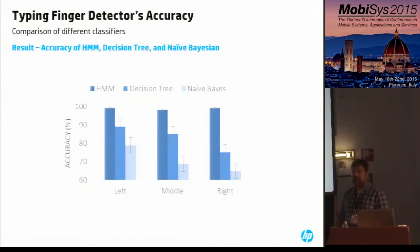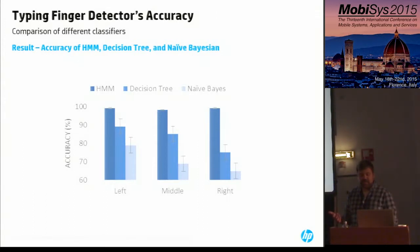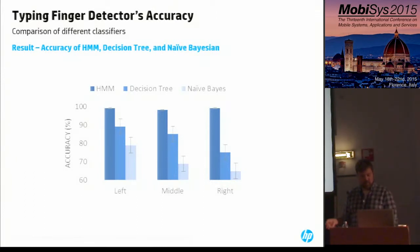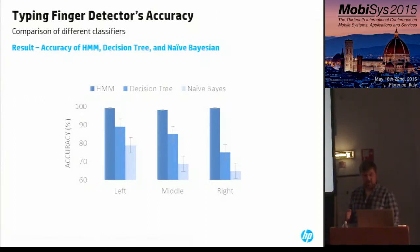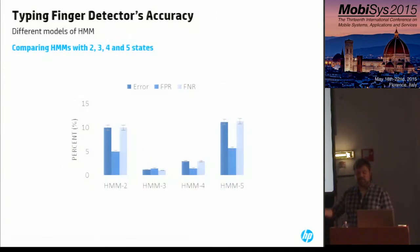This figure compares the accuracy of the three algorithms in detecting the typing finger. The hidden Markov model performs best with an average accuracy of almost 99%, about 20% higher than the other two. The HMM outperforms the others because it considers the sequence of states, with each state formed by combining all three sensors. The naive Bayesian classifier assumes independence of all three sensor types, which is not true in our problem. The decision tree assumes all variables interact, which is also not quite true — the left and right proximity sensors are mostly independent of one another — and it also suffers from overfitting.